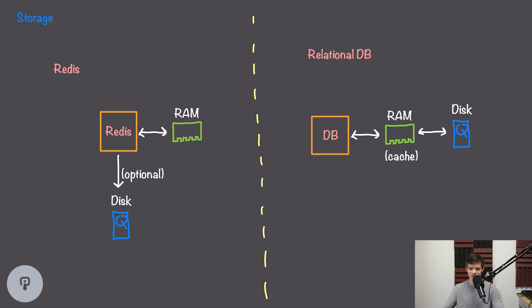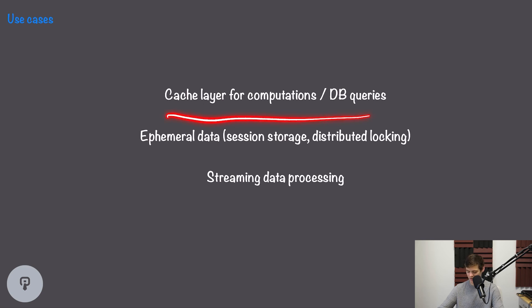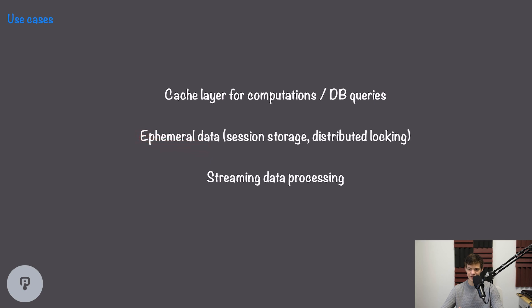For caching, which is a typical use case of Redis, this is completely fine because we can simply refetch all the data and cache it — nothing is permanently lost. Redis does have some features built in that allow it to persist data to disk optionally. Common use cases include a cache layer for computations or database queries, where we cache an expensive computation result and access it quickly later. Any ephemeral data is also great for Redis, such as session storage or distributed locks — things that don't require persisted data on disk.